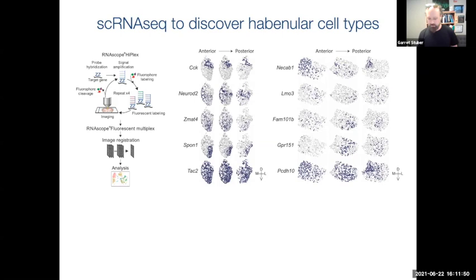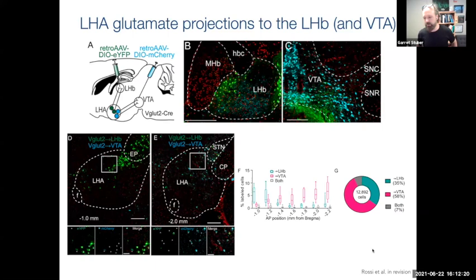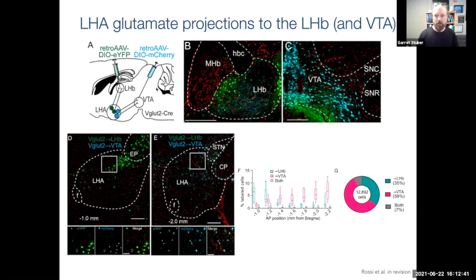In the last few minutes, I'm going to move on since this was published last year — there are lots of other analyses you can look at in the paper. I'll present something newer and unpublished: work looking at projections from the lateral hypothalamic area, which sends robust projections both to the lateral habenula and to the VTA. This was work done by Mark Rossi, who was a postdoc in the lab until about two weeks ago. Mark is now starting his own lab at Rutgers University in July and is actively looking for students and postdocs.